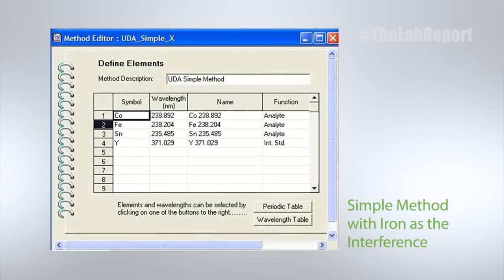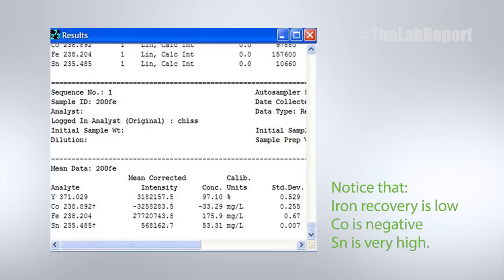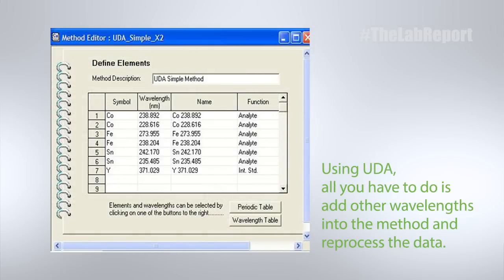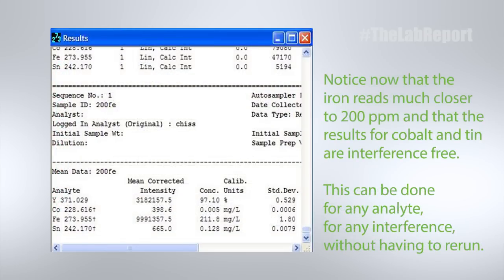And what are those things? One is data validation. How many times have you run a certain wavelength and found that it doesn't work, and then you have to go back and rerun? Now, like this example with cobalt — let's say you ran a solution, your cobalt number is too low, you see a negative number, and your zinc number is too high. You put the other wavelengths into your method and simply reprocess the data. As you can see here, you have the correct number for cobalt using a different wavelength, and a better number for tin using a different wavelength. You didn't have to rerun anything — all you had to do was reprocess your data. Data validation is very important.